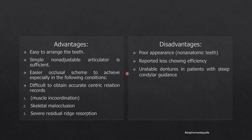Advantages of the monoplane occlusal scheme: it is very easy to arrange the teeth and does not require a semi-adjustable or fully adjustable articulator — a simple hinge articulator such as class 1 or class 2 can be used. It is easier to achieve in conditions such as poor neuromuscular control, malocclusion like Class II or Class III ridge relationships, and cases of excessive residual ridge resorption.